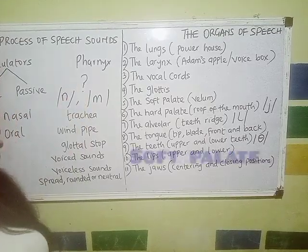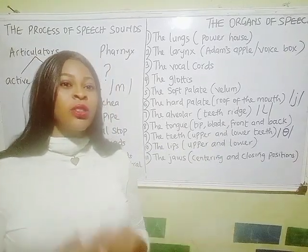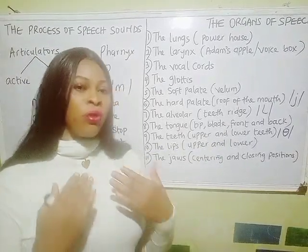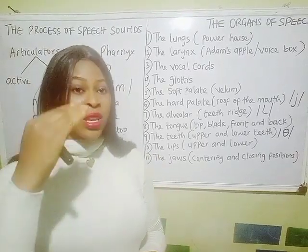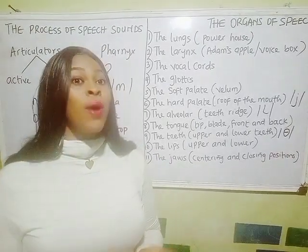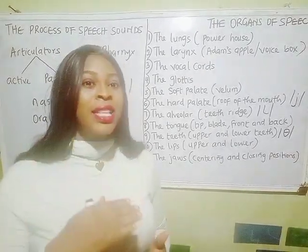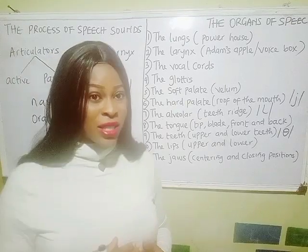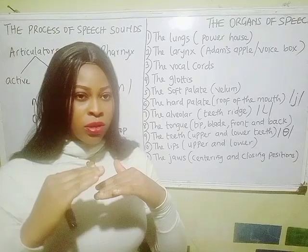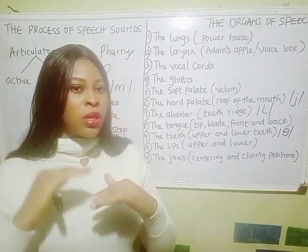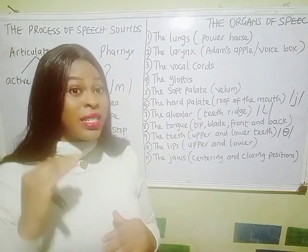The next organ is the soft palate, also called the velum. The soft palate is attached to the back of the mouth or the pharynx. It can either be raised up or lowered to articulate sounds. When it is raised up, it blocks the nasal cavity and we produce oral sounds. When it is lowered, it opens up the nasal cavity and we produce nasal sounds.